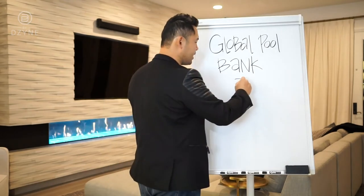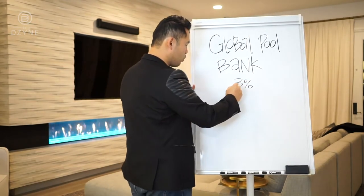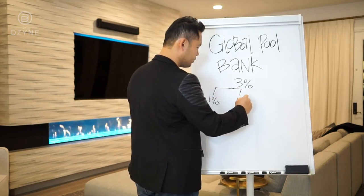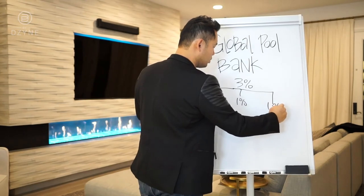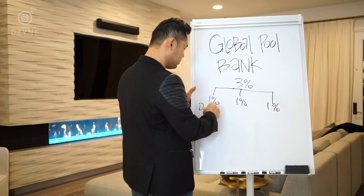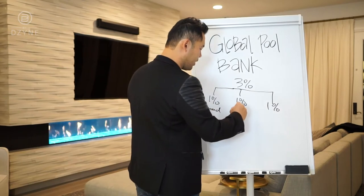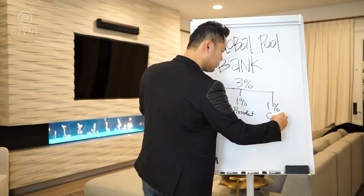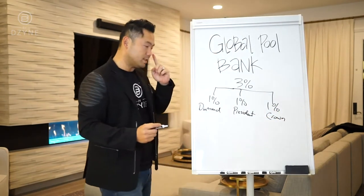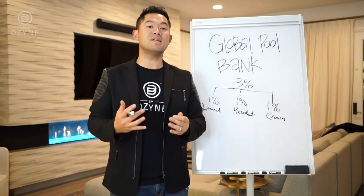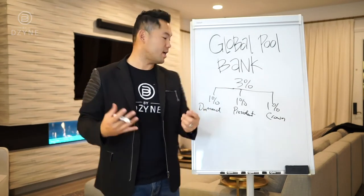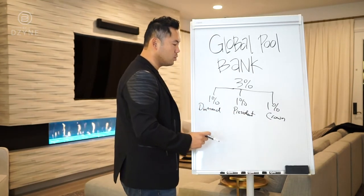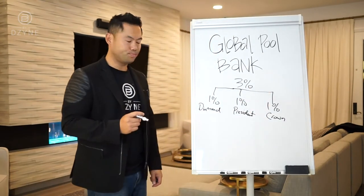We take that three percent and divide it into three pools — one percent per pool. We have a Diamond pool, a President pool, and a Crown pool. We then convert that three million BV to dollars, so it becomes one million dollars into the Diamond pool, one million dollars into the President pool, and one million dollars into the Crown pool.